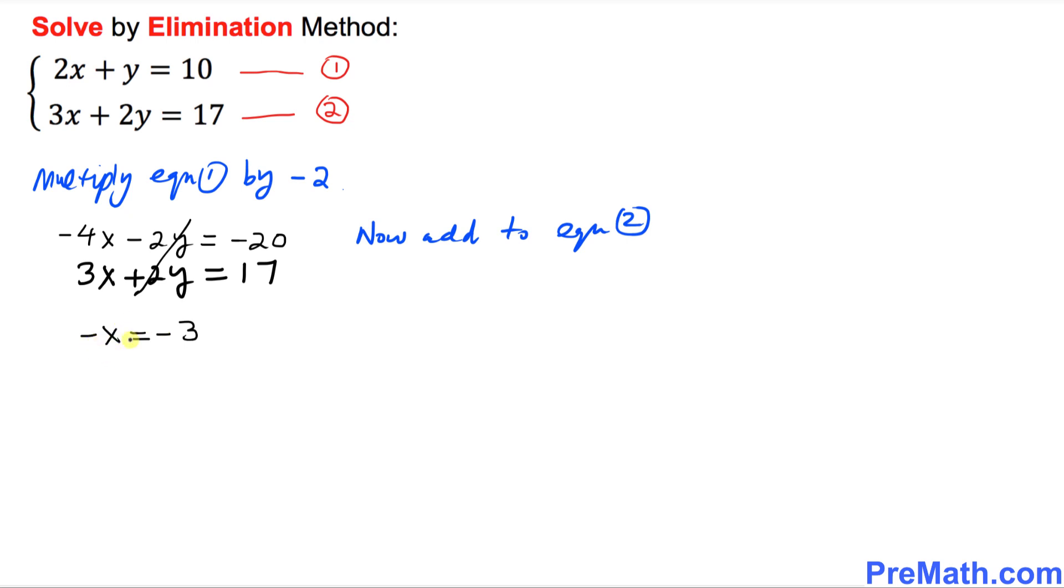So that means now you can cancel out this negative sign. x turns out to be simply positive 3. So we finally found x equals 3.